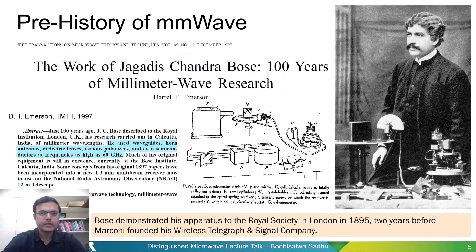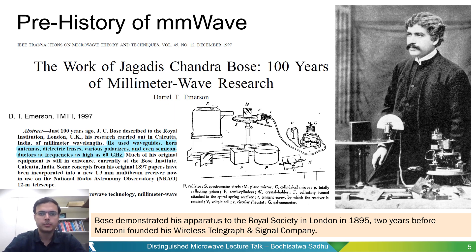While millimeter wave certainly seems to be the new kid on the block, fascinatingly, this is far from the truth. In fact, in 1895 — two years before Marconi founded his wireless telegraph company — a scientist in then British India, J.C. Bose, demonstrated millimeter wave communication, using frequencies as high as 60 GHz to wirelessly ring a bell a few rooms away. He used horn antennas, waveguides, and semiconductor junctions, and his test setup doesn't look too different from a millimeter wave test setup in some of our labs today. It is quite an astonishing story, and I encourage you to find out more in this review paper from 1997.